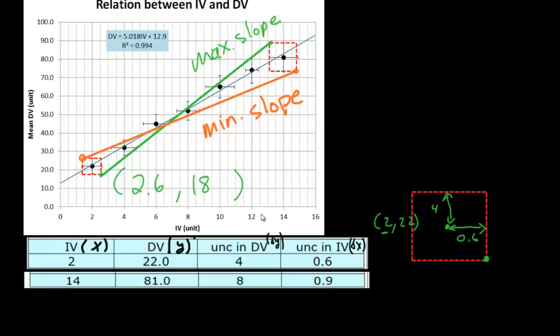And we could do the same thing for this point here at the top. In that case, for the top point, then our central point would be the point 14, 81. Our uncertainty in the y variable is 8. So this height here would be an 8.